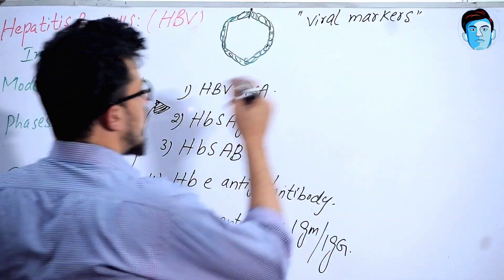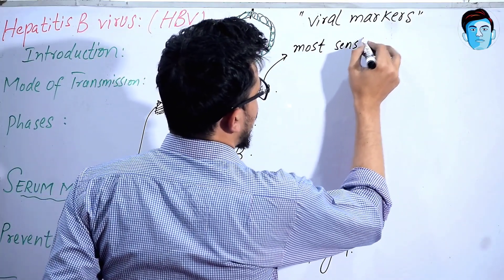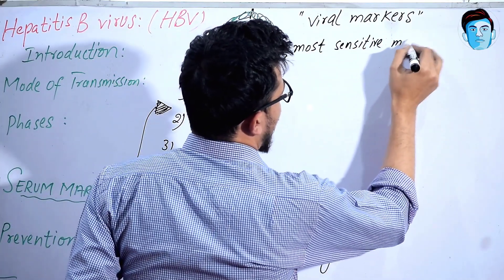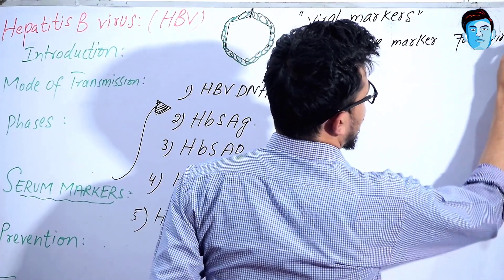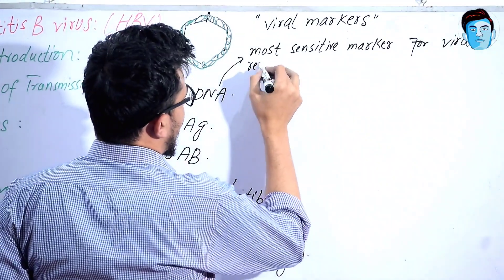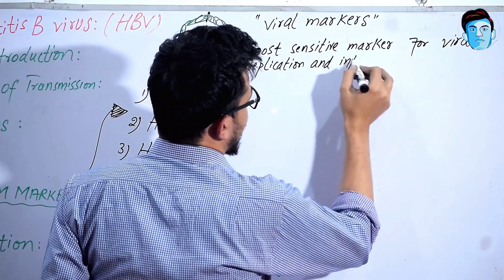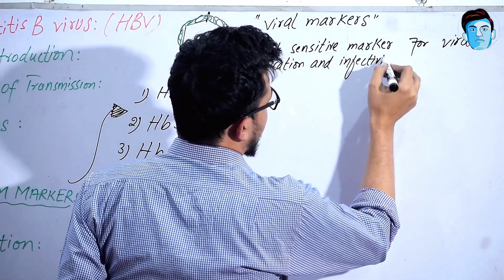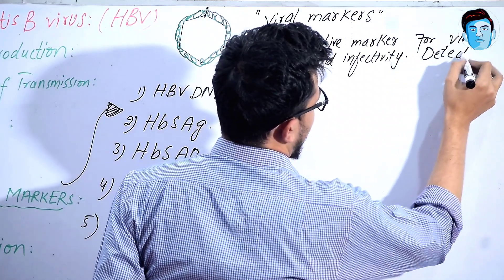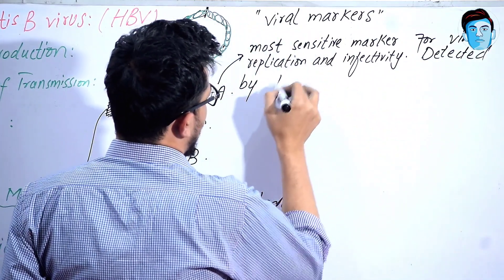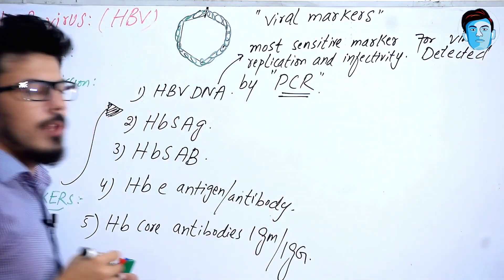Let's talk about Hepatitis B virus DNA. It is the most sensitive marker for viral replication and infectivity. You can detect it by only one technique, that is PCR.